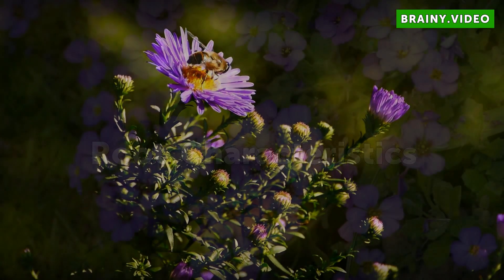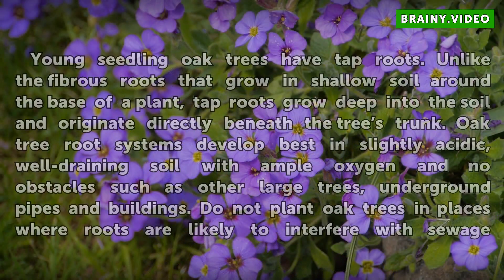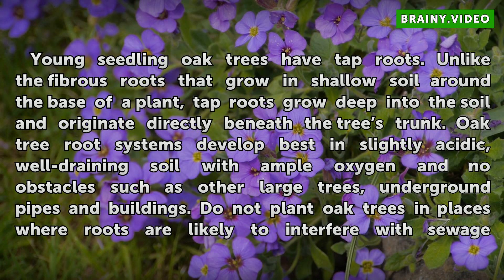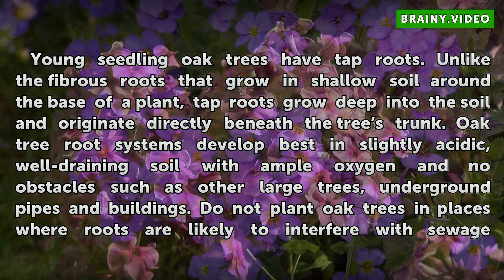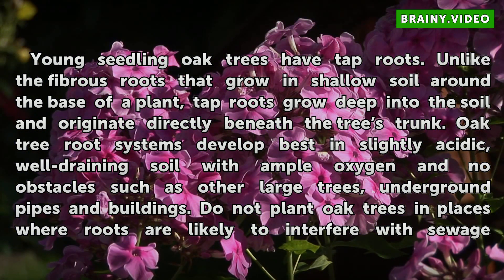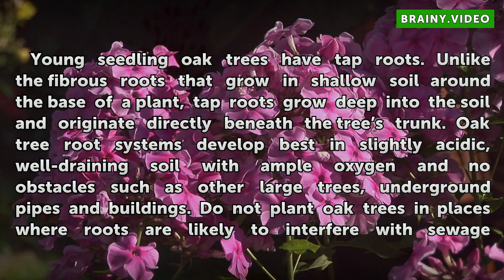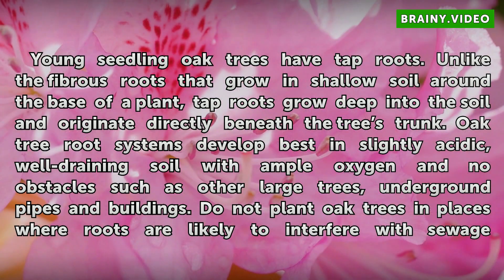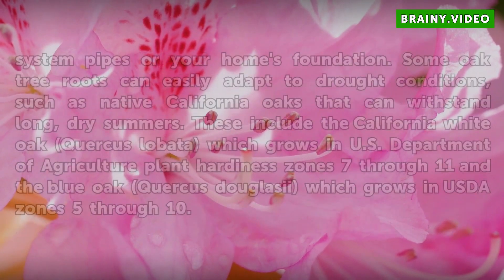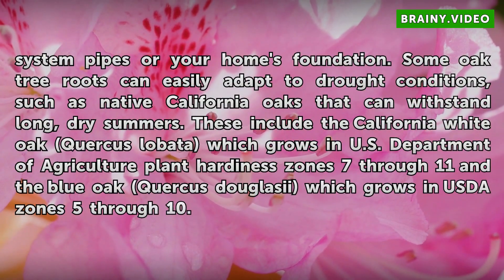Root Characteristics: Young seedling oak trees have tap roots. Unlike the fibrous roots that grow in shallow soil around the base of a plant, tap roots grow deep into the soil and originate directly beneath the tree's trunk. Oak tree root systems develop best in slightly acidic, well-draining soil with ample oxygen and no obstacles such as other large trees, underground pipes, and buildings. Do not plant oak trees in places where roots are likely to interfere with sewage system pipes or your home's foundation.